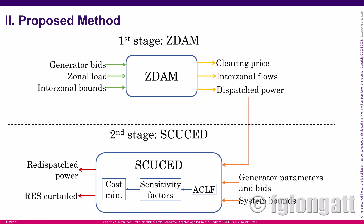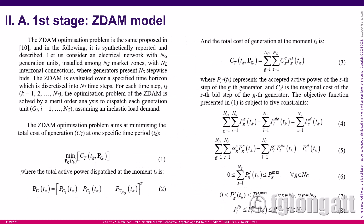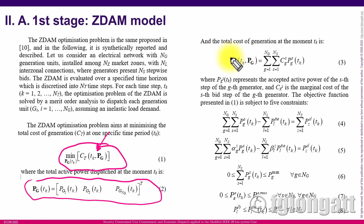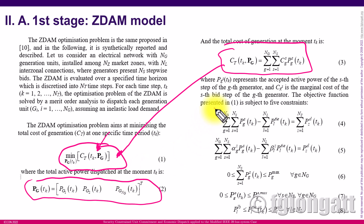Here are some mathematical details about the formulation. For stage one, we have the problem formulation for the zonal day-ahead market, which is an optimization problem aiming to minimize the total cost of generation based on a specific time period, where PG represents the vector of active power generation of each generator and the total cost function is included. This optimization problem includes five different constraints: maximum and minimum generation, maximum and lower boundary for the intertie power flow, and power balance.